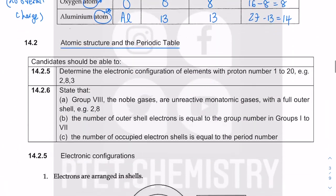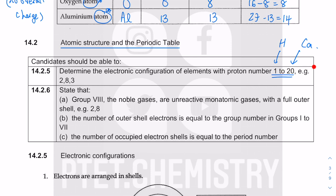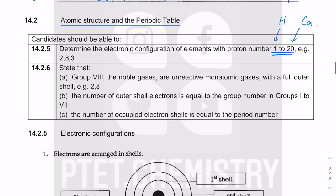Electronic configuration is to do with how we fill the electrons inside those electron shells, and it covers elements with proton number one to twenty. That's why I ask you to remember the elements across the first, second, and third periods. The period number is to do with the number of occupied electron shells.